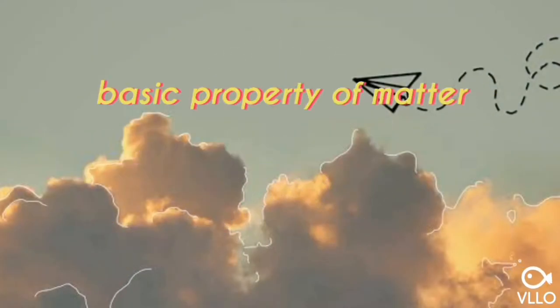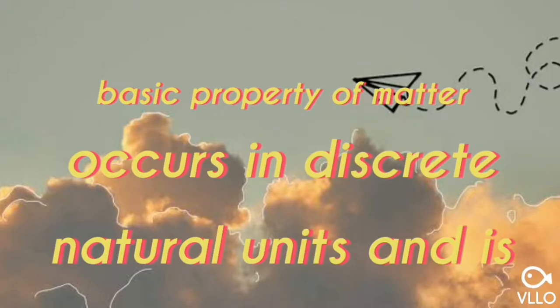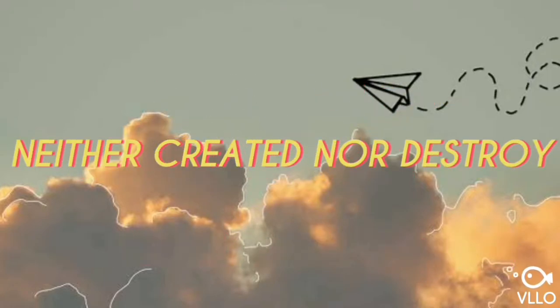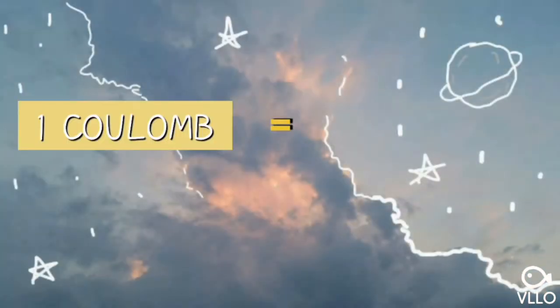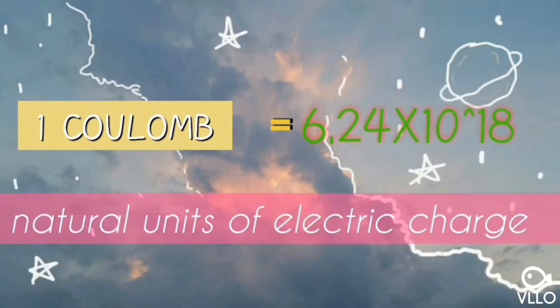Electric charge is the basic property of matter, occurs in discrete natural units, and is neither created nor destroyed. One coulomb consists of 6.24 times 10 raised to 18 natural units of electric charge.